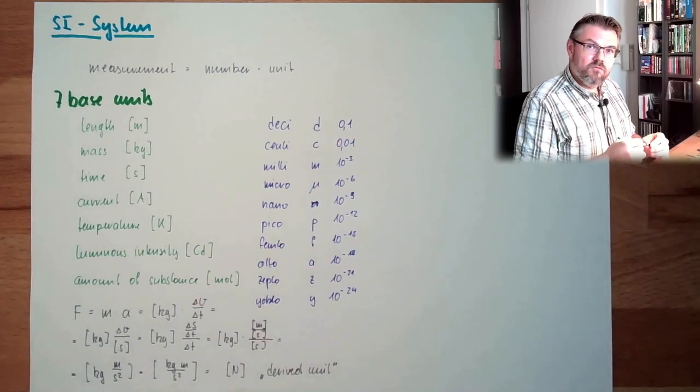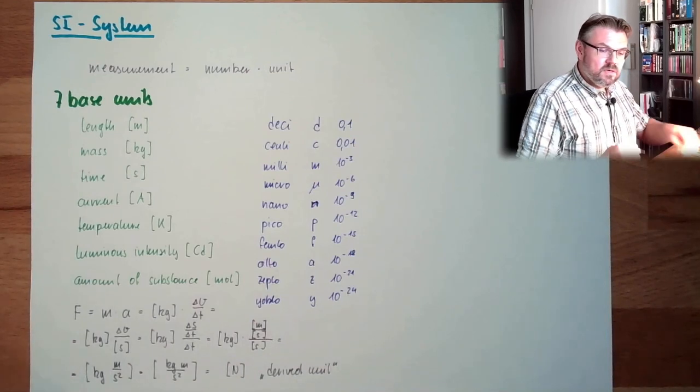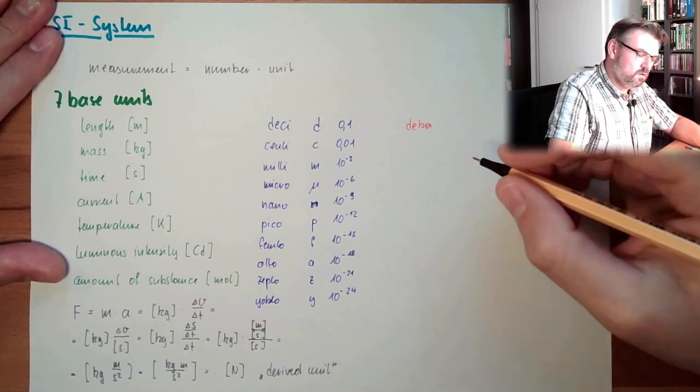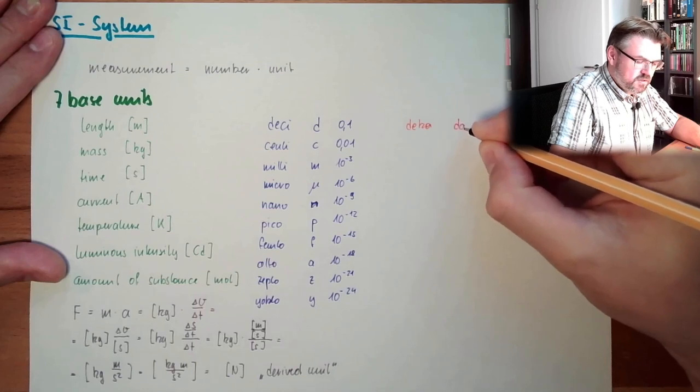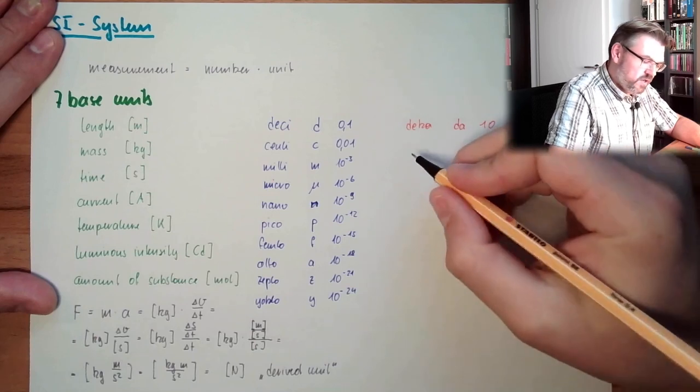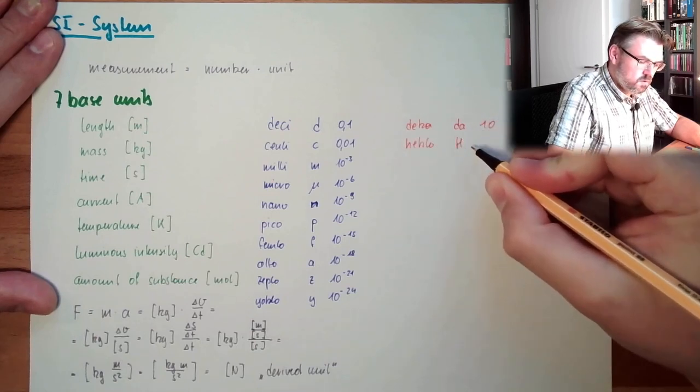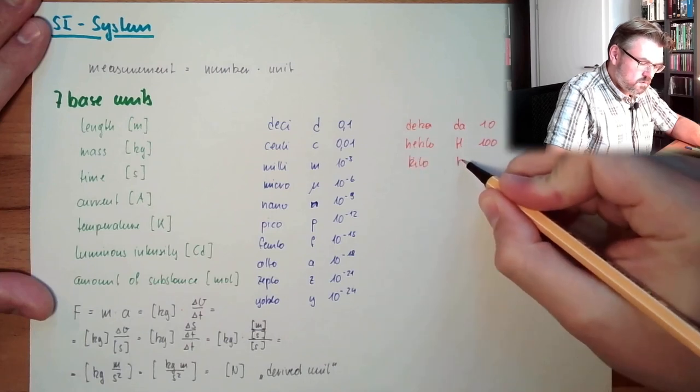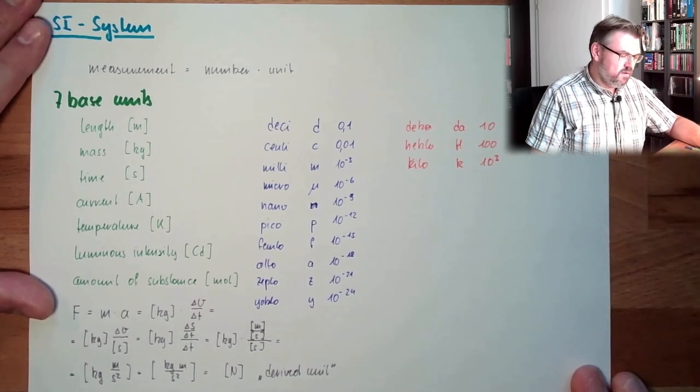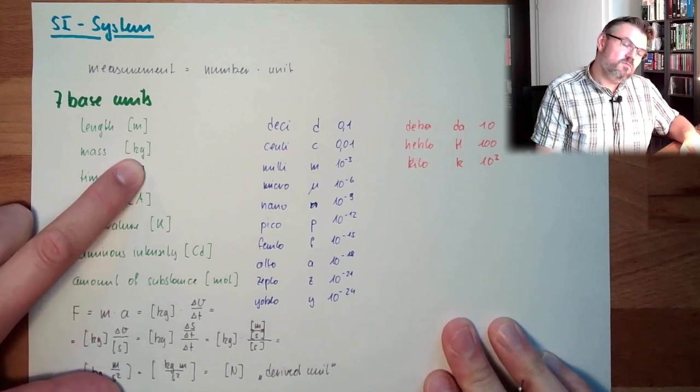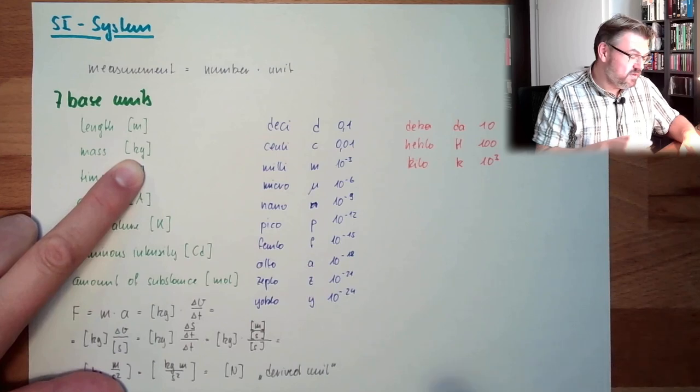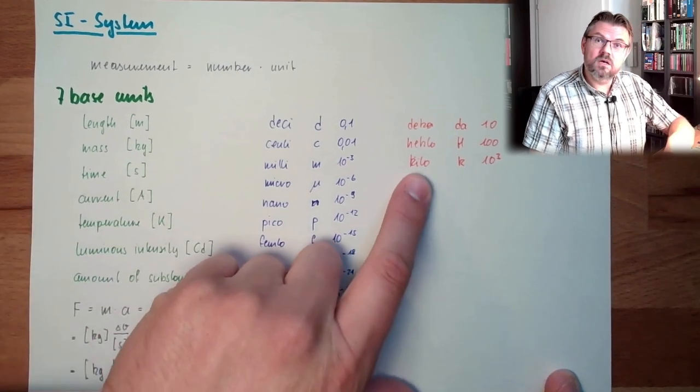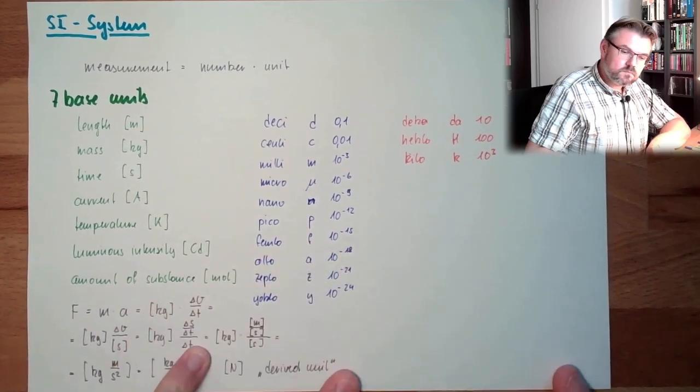So these are for going down, for describing tiny things. For describing bigger things, we have here, it's the deca. Deca. This is abbreviation dA, and this is 10, factor 10. Then there is the hecto. This is factor 100. Hectoliter, for instance. Then there is kilo. This is factor 1000, 10 raised by the power of 3. This is interesting. There is a base unit which is already measured in kilograms. So not gram is the base unit. The base unit is kilogram. That's interesting. So that's the only base unit where this is the case, that we already use such preterm.